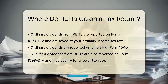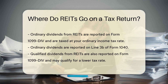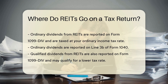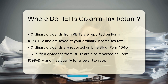Ordinary Dividends from REITs are reported on Form 1099-DIV. These dividends are typically taxed at your ordinary income tax rate. You will report them on Line 3B of Form 1040.